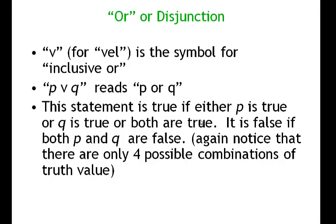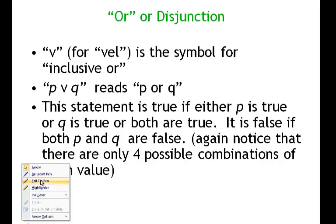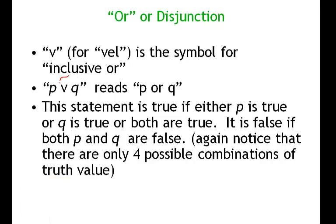Now let's talk about disjunction, or the OR operator. We're going to use a wedge symbol, which harks back to the Latin word 'vel,' meaning OR — but it's a special kind of OR: the inclusive OR. P wedge Q is read as 'P or Q,' and this statement is true if either P is true, or Q is true, or both are true. It's only false in the case where both P and Q are false.